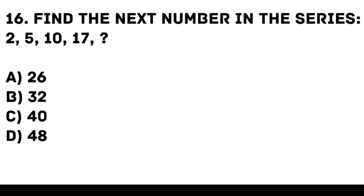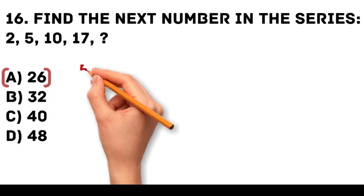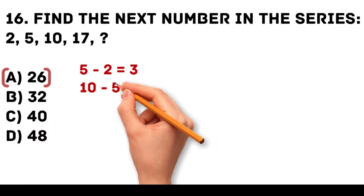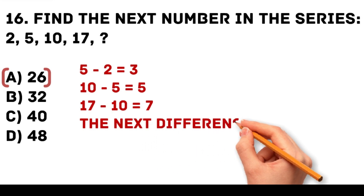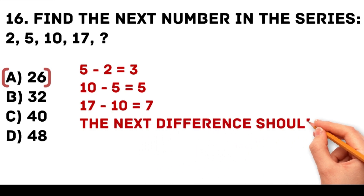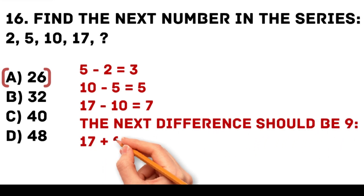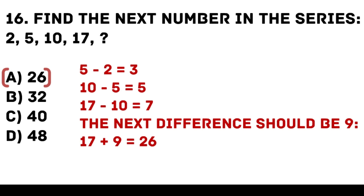Answer: A. 26. The differences between the numbers increase by 2. 5 minus 2 is equal to 3. 10 minus 5 is equal to 5. 17 minus 10 is equal to 7. The next difference should be 9. 17 plus 9 is equal to 26.